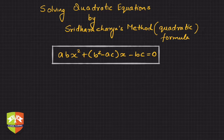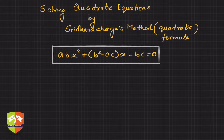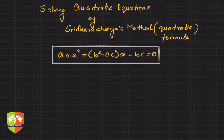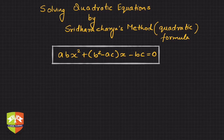Hello friends, we have taken another question to solve here and we are again solving a quadratic equation by Sridharacharya's method, which is also called the quadratic formula method. We have to solve the given equation: abx² plus (b² minus ac) times x minus bc equals zero. If you notice, there are no numerals in the equation — all are in terms of constants a, b, and c, and the variable is x.